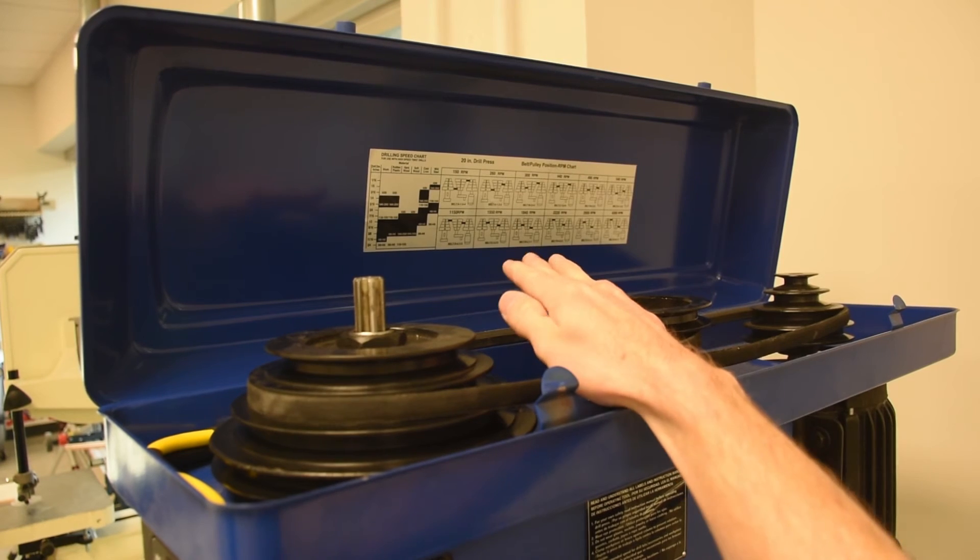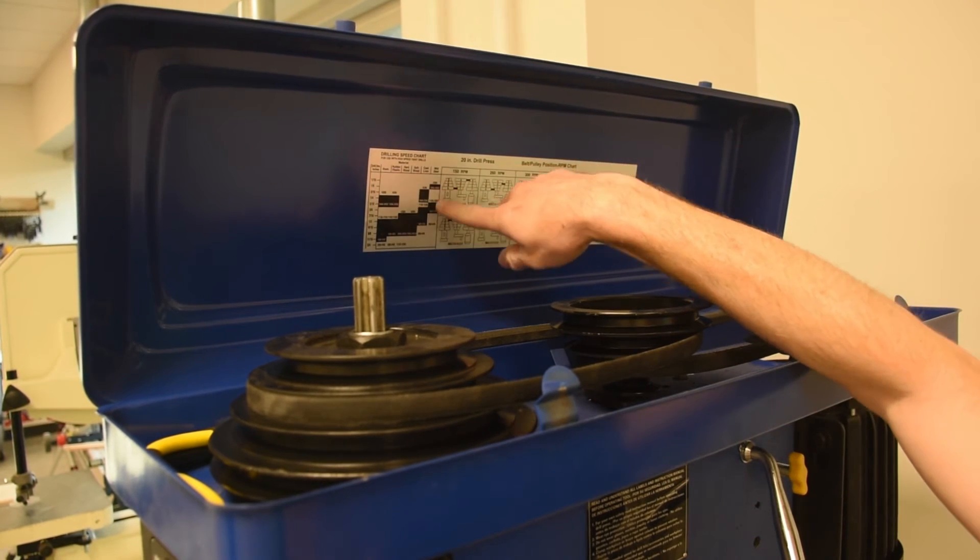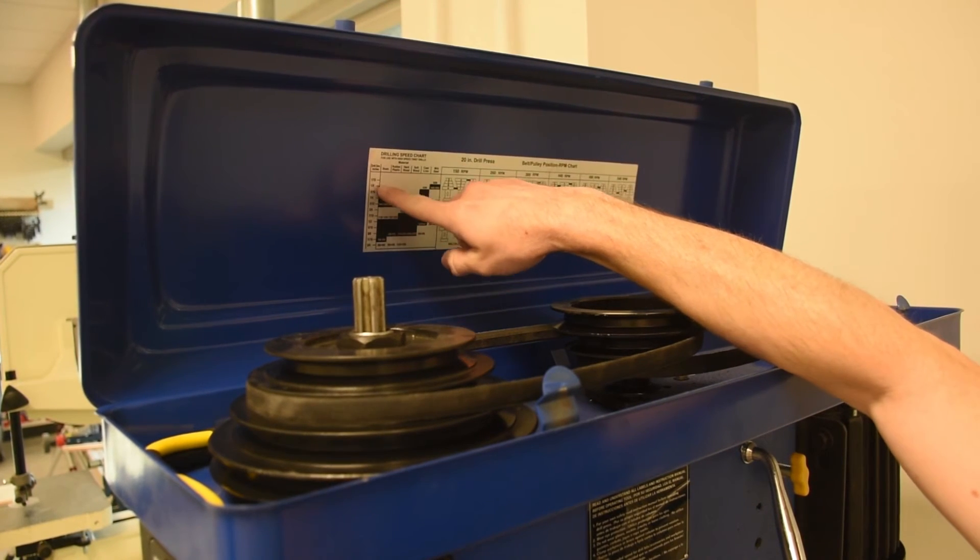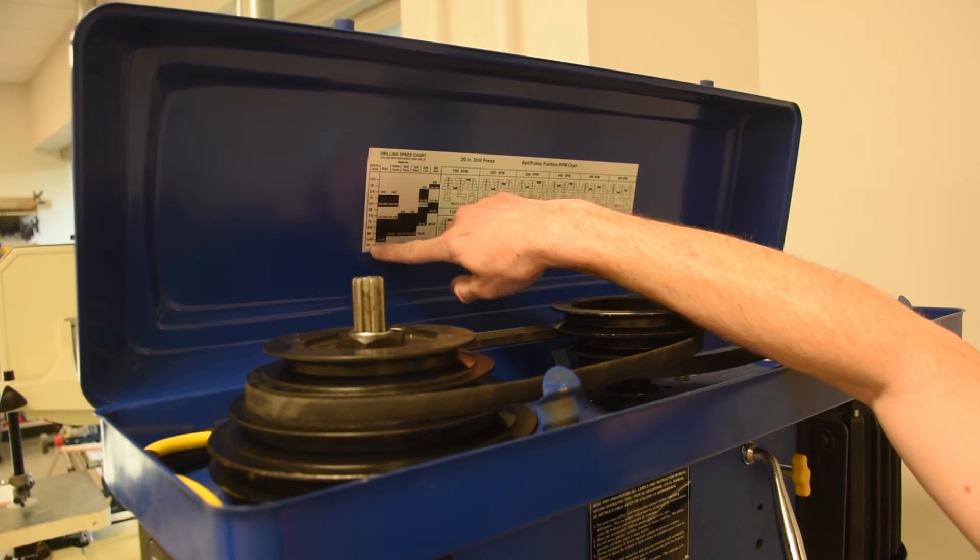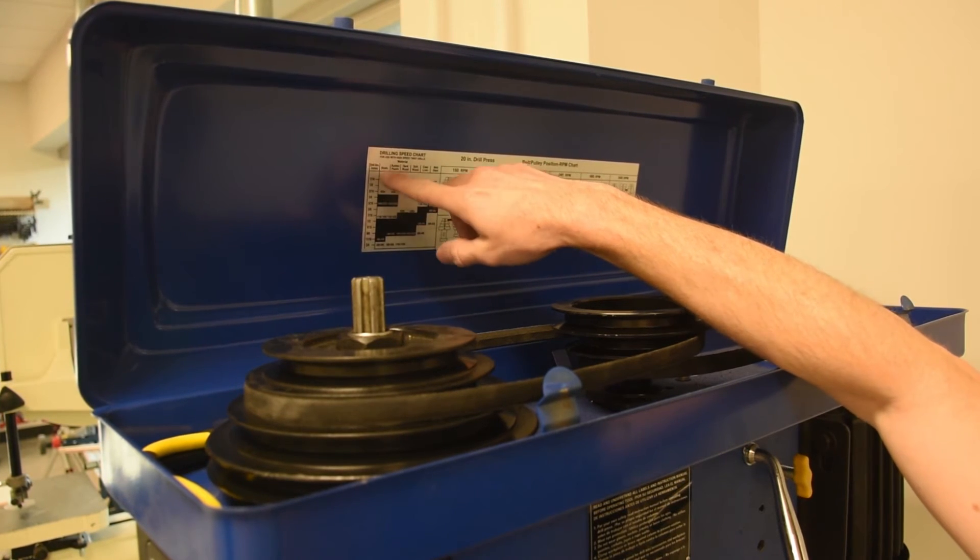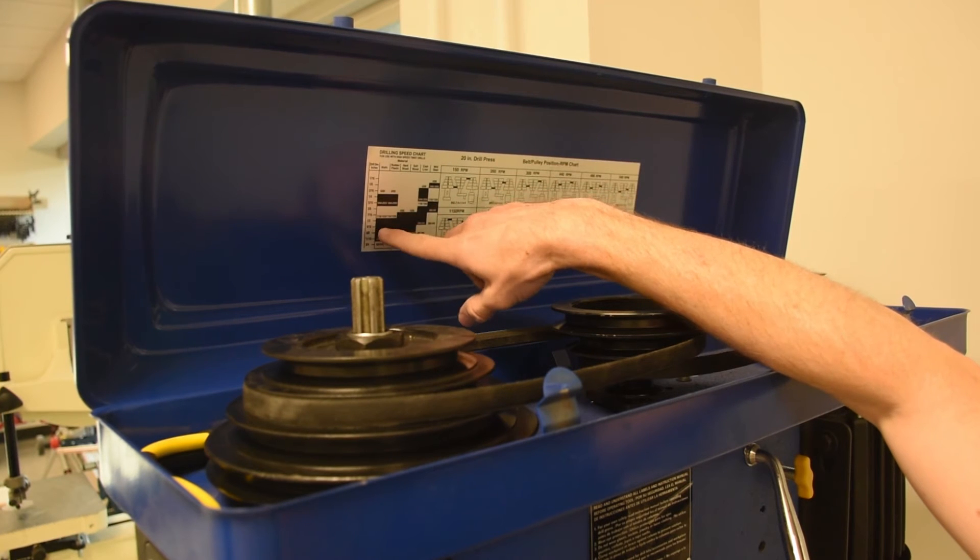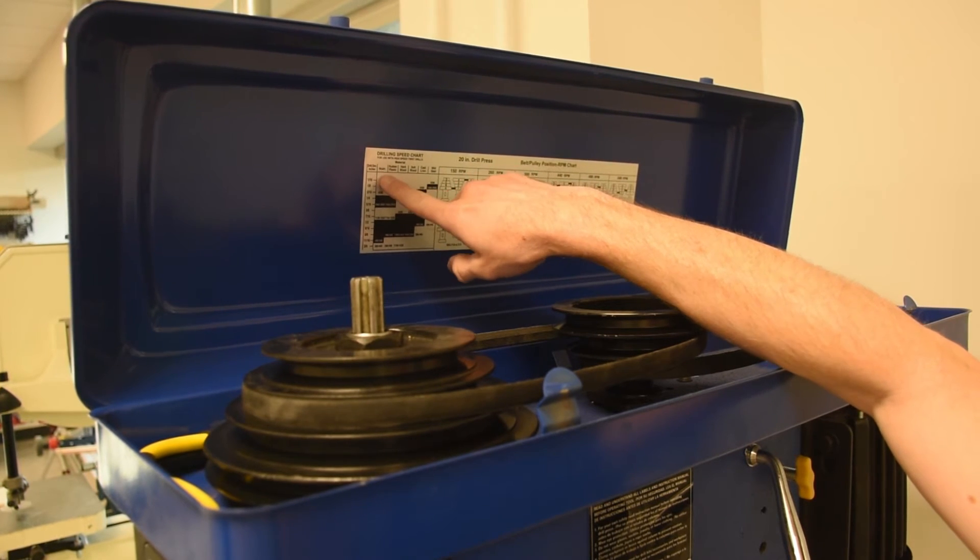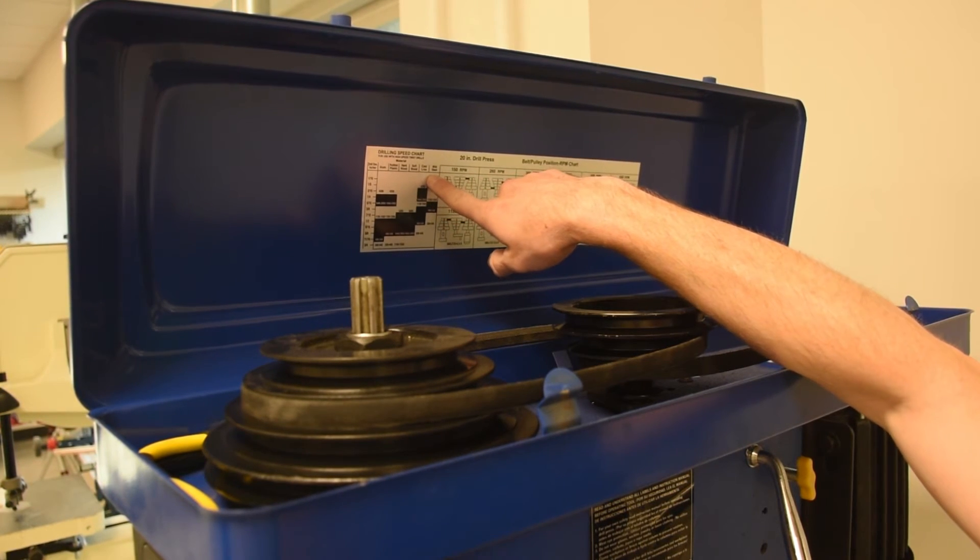This table up here, though, is what I was talking about. On the left side here, you've got, in the left-hand column, it's got your drill diameter. Pick one that's close, but always err on the side of caution and go larger if you're unsure. Then on the top, we've got all the different materials we're going through.